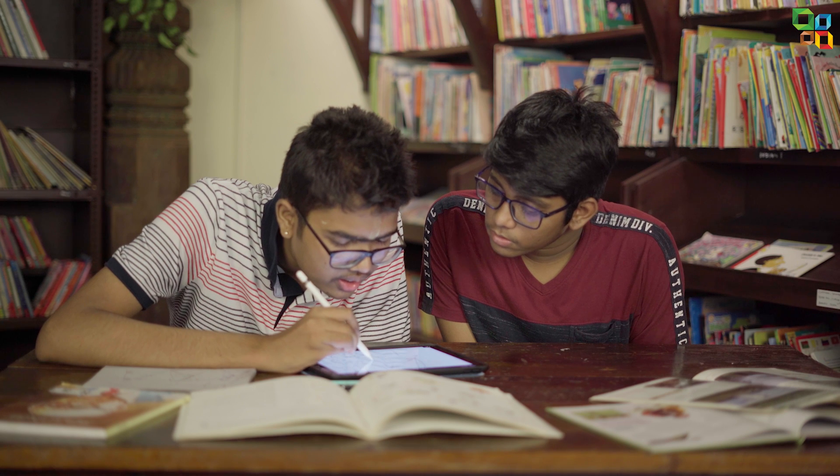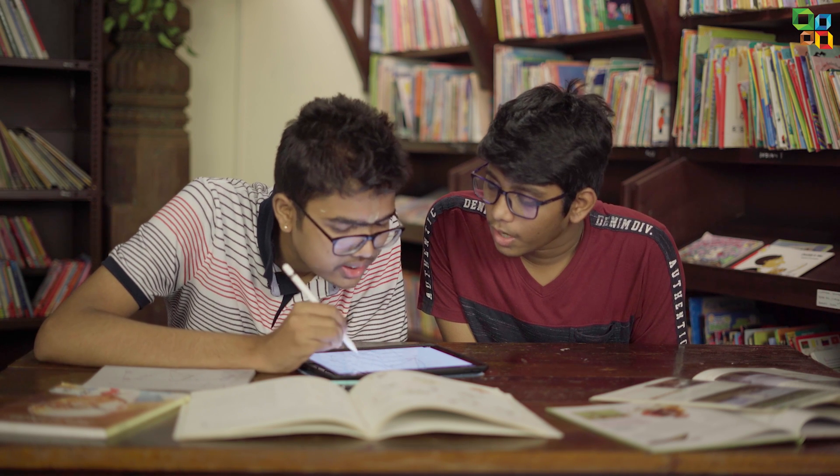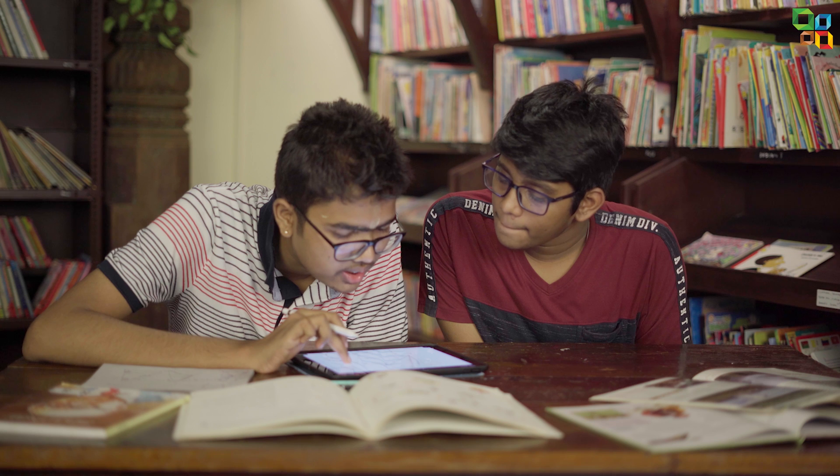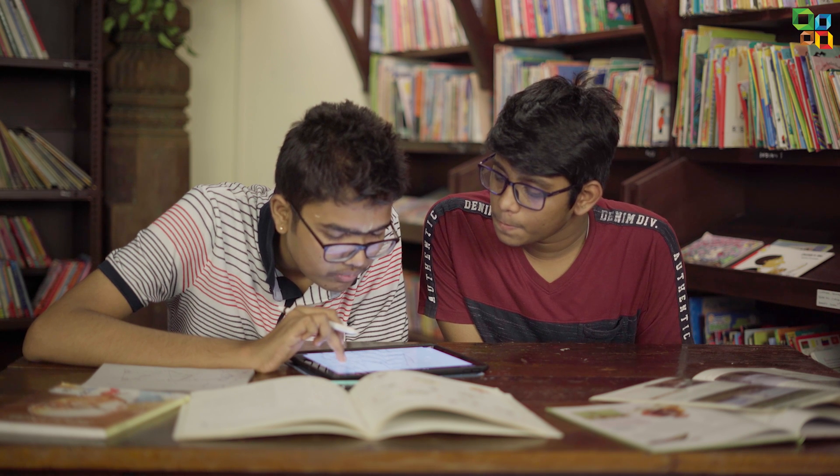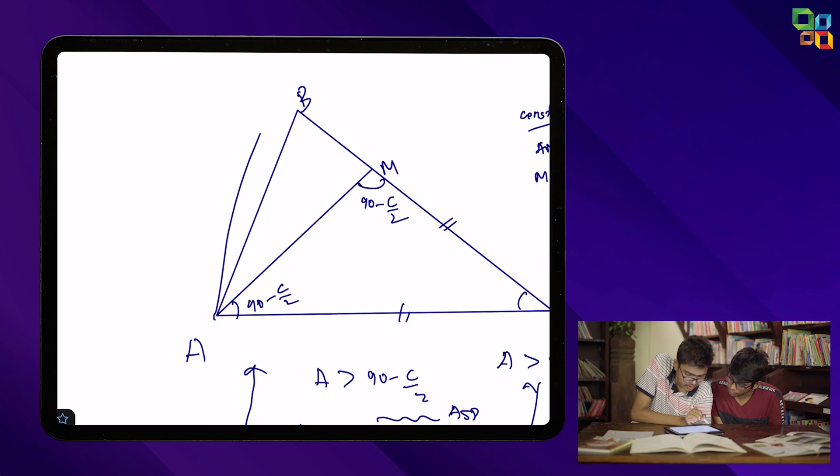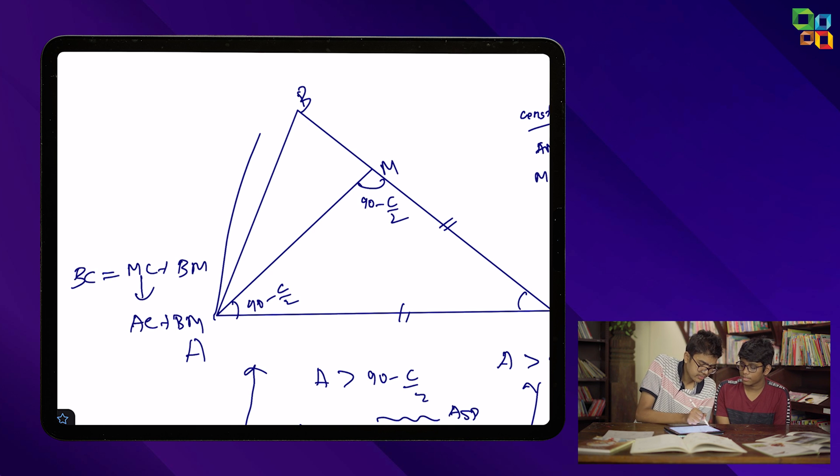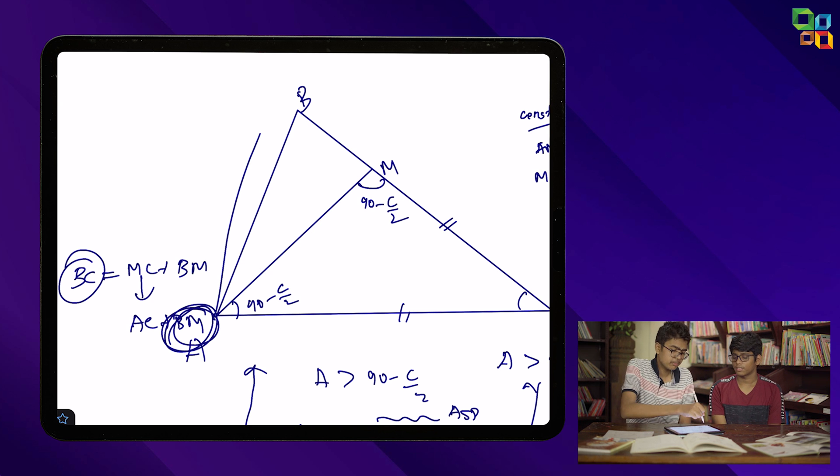AC is equal to this. This is an isosceles triangle by construction. So we can write BC as AM plus CM. MC plus BM. Correct. But MC is AC. So BC equals AC plus BM. So BC is AC plus some positive quantity. Correct. BM plus AC. So BC has to be greater than AC. Correct.